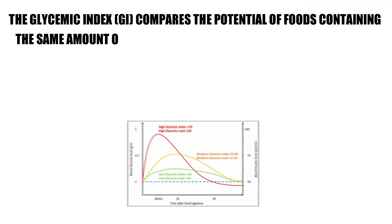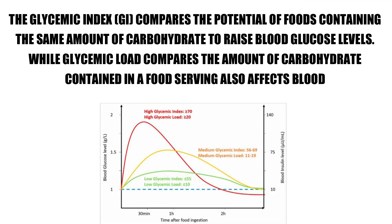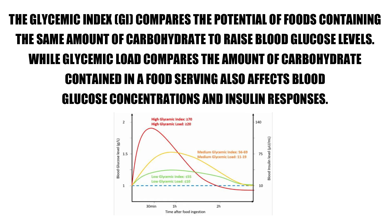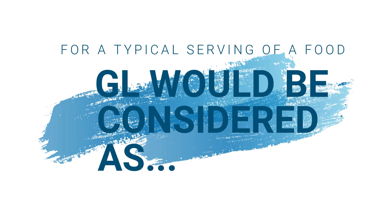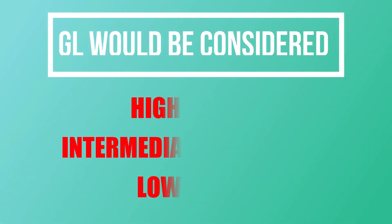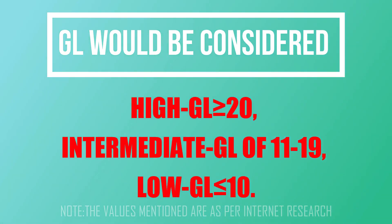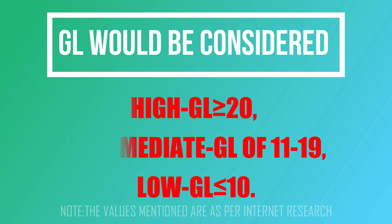What is glycemic load? The glycemic index compares the potential of foods containing the same amount of carbohydrate to raise blood glucose levels, while glycemic load compares the amount of carbohydrate contained in a food serving and how it also affects blood glucose concentrations and insulin responses. For a typical serving of a food, GL would be considered high with GL greater than or equal to 20, intermediate with GL of 11 to 19, and low with GL less than or equal to 10.